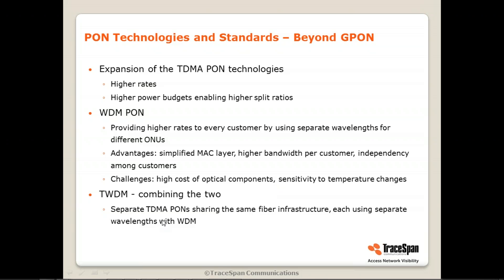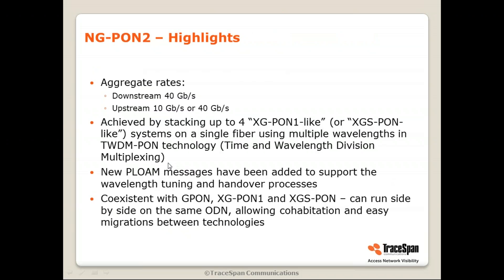TWDM combines the two. It takes several PONs which are tree topology TDMA PONs on the same fiber infrastructure, but they use separate wavelengths. This way you don't need as many wavelengths as in pure WDM PON and you have the best of both worlds. So this is NGPON2.